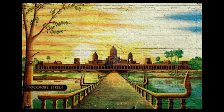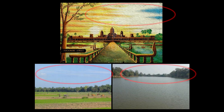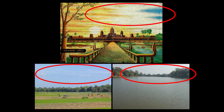For example, for this painting, we want to find top matches from a large dataset. These are the top matches that a computer returns using a standard algorithm. As you can see, the computer focuses on the gradients in the sky and ground, which occupy most of the image.